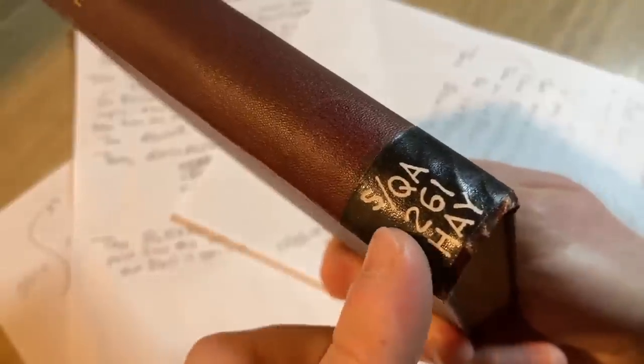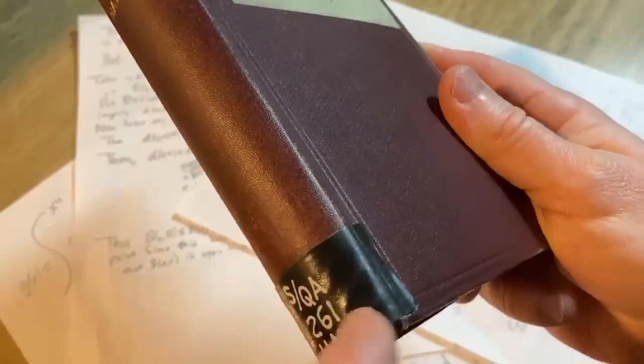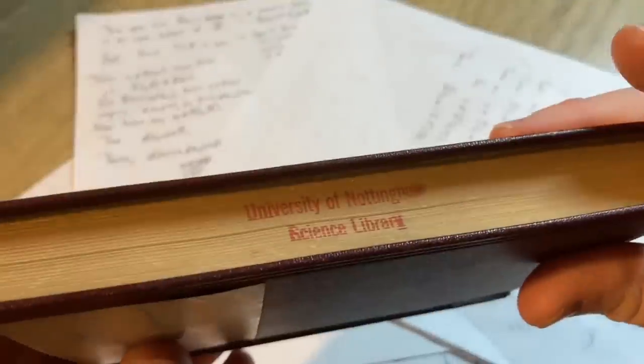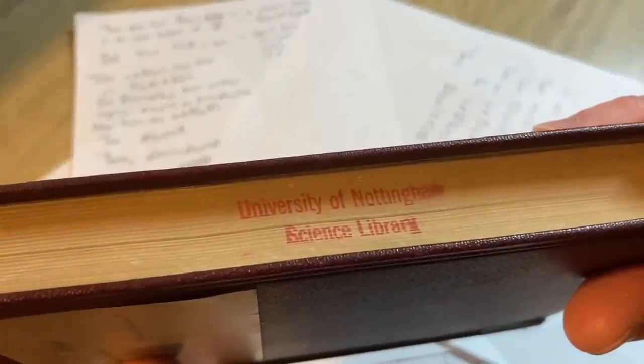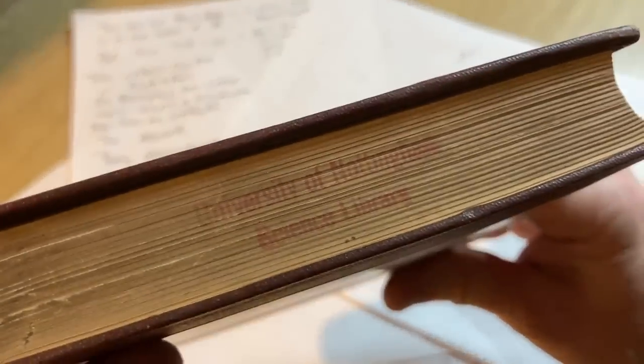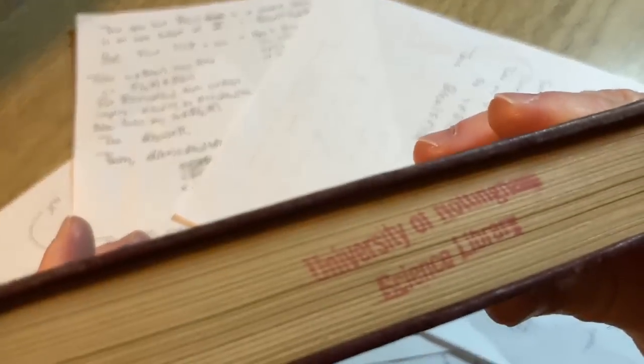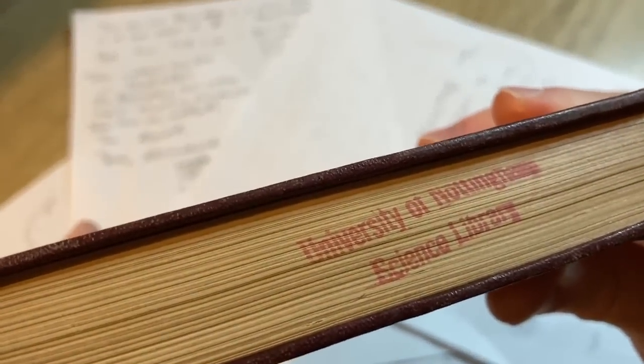I got this from the library. They always have these stamps so that they can organize the books. Here it says University of Nottingham Science Library. I don't know if we can make that out, yeah University of Nottingham Science Library, and here it says once again University of Nottingham Science Library.